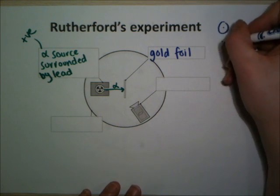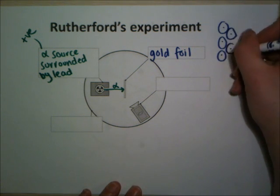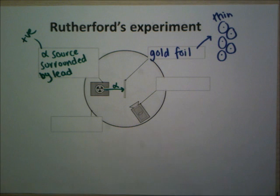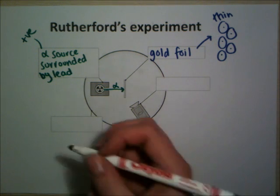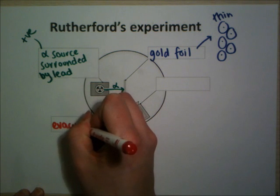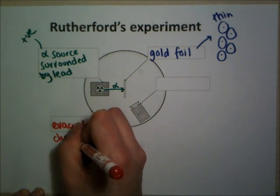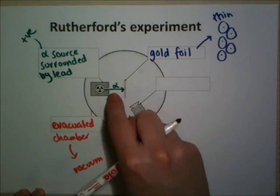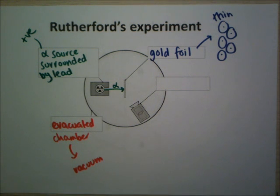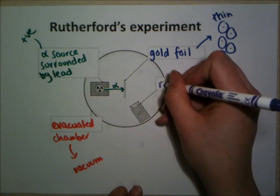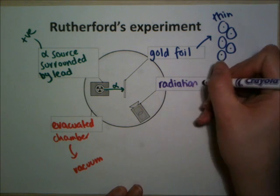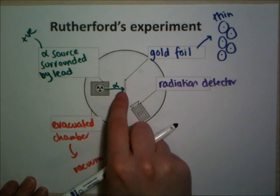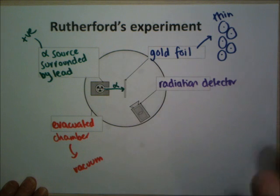We can think of it as just one or two layers of atoms - a really thin piece of gold foil. This all took place in an evacuated chamber, i.e. a vacuum. So the only things in there were the alpha particles and the gold foil - there was no air to get in the way. The final component was a radiation detector. What Rutherford did was fire his alpha particles through the gold foil and then move the detector around to see where the radiation was picked up.